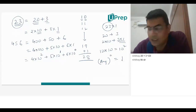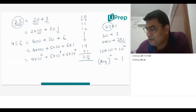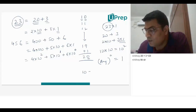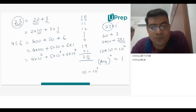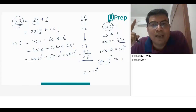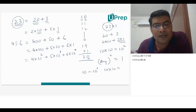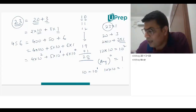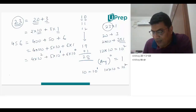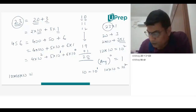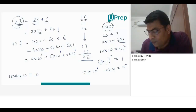Whenever we have any number to the power of 0, it is always equal to 1. So, 10 to the power of 0 is 1. Here, 10 into 10 is 10 squared. If we have only 10, another way of writing 10 is 10 to the power of 1 — meaning we are taking only 1 time of 10. And 10 into 10 is 100, which we write as 10 squared. If I write 10 into 10 into 10, that is 10 to the power of 3.